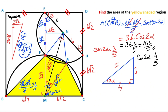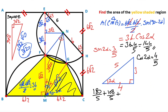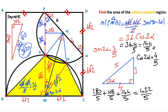So the area of the shaded region equals 36 minus 108/5 plus the value of this triangle, which is 108/5, and the value of this triangle, which is 144/5. That means the area of the shaded region is going to be 432/5 square units.